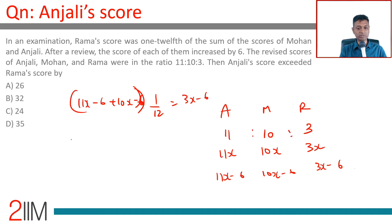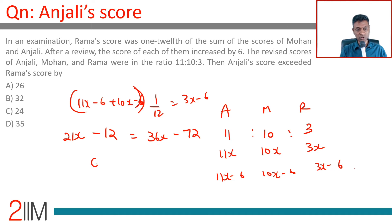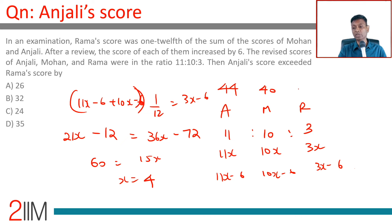11x plus 10x is 21x, minus 12, equals 36x minus 72. So 60 equals 15x, or x equals 4. Therefore, Anjali after revision scored 44, Mohan scored 40, and Rama scored 3×4 = 12.